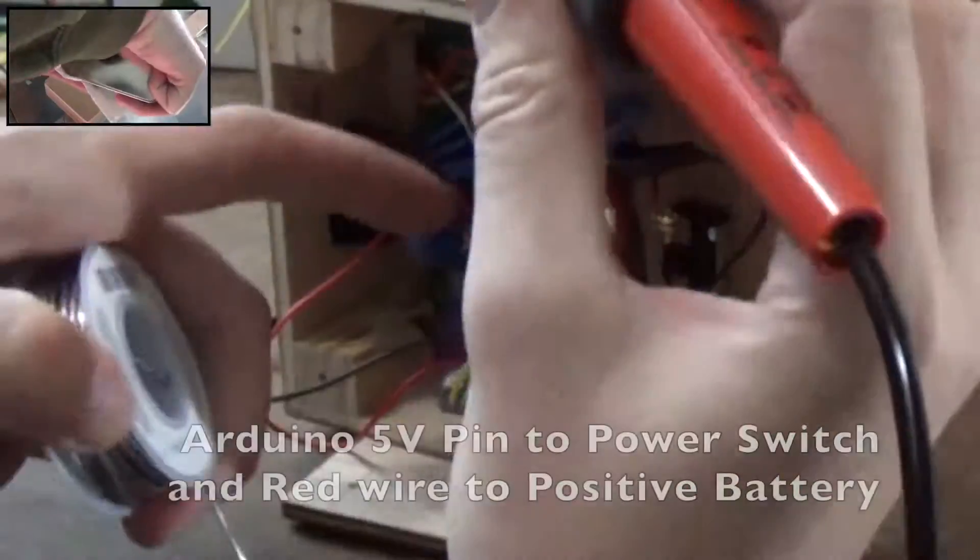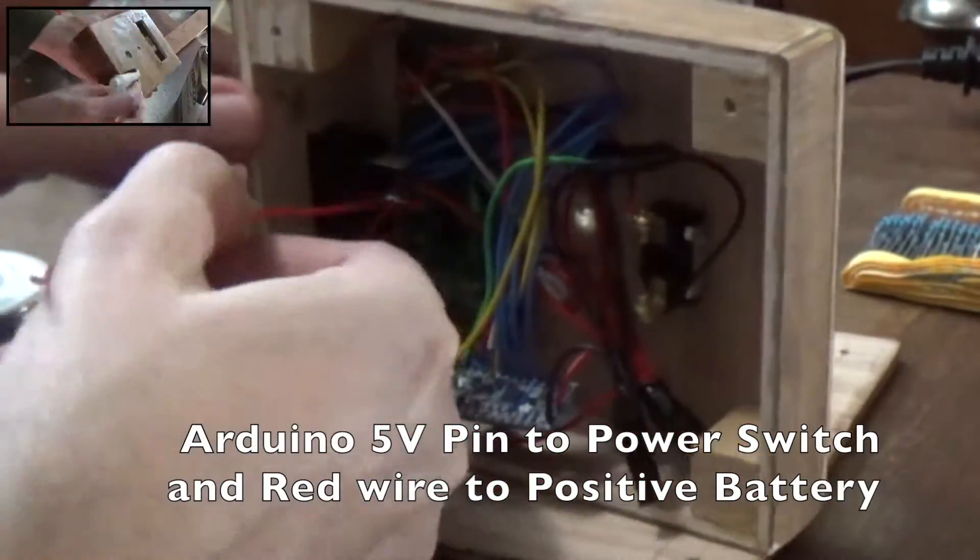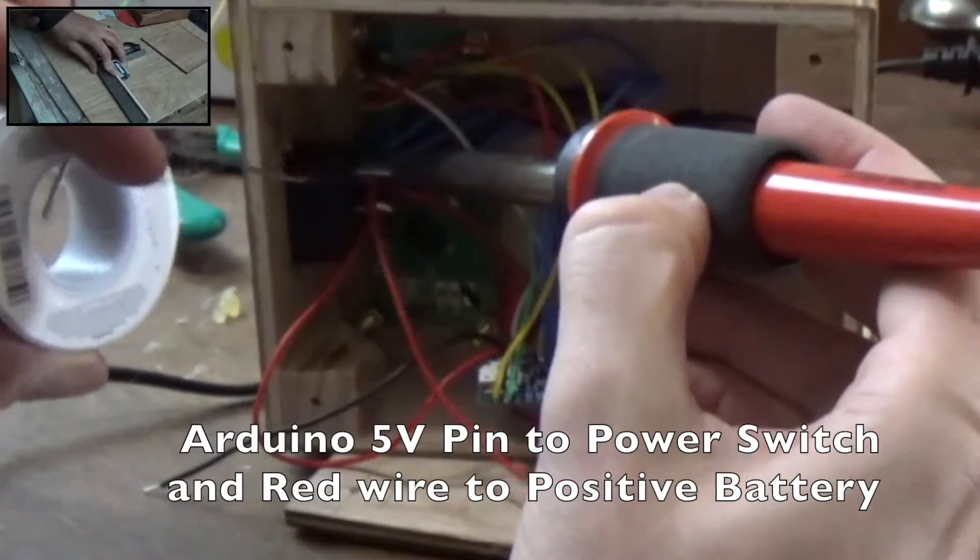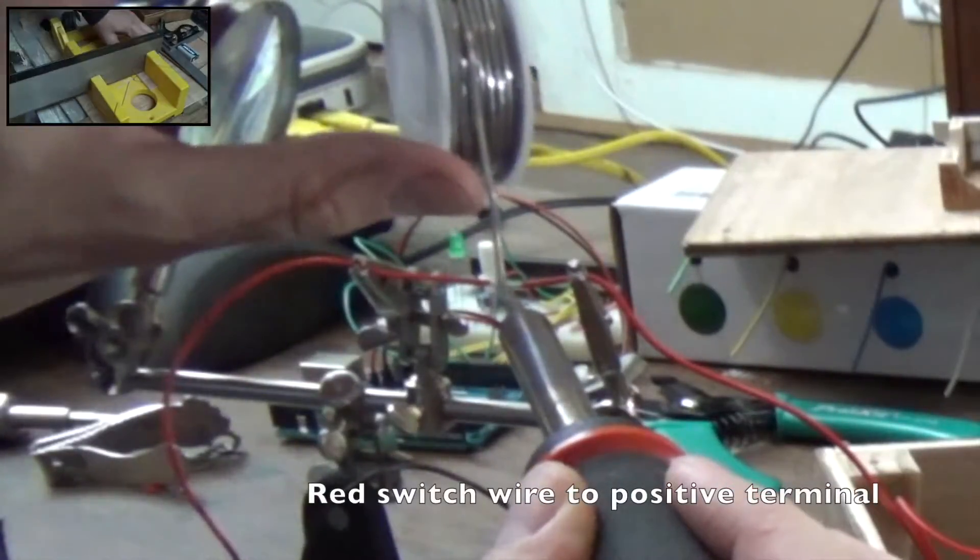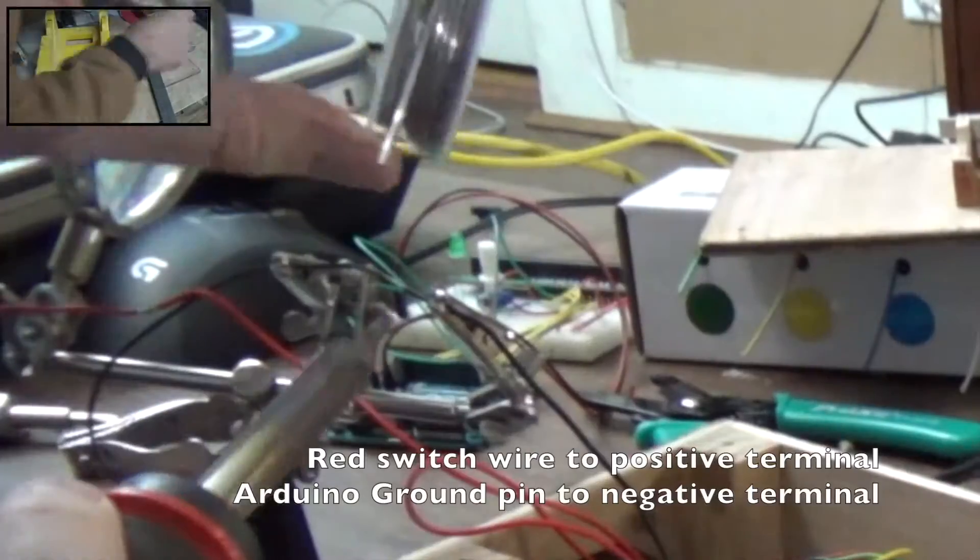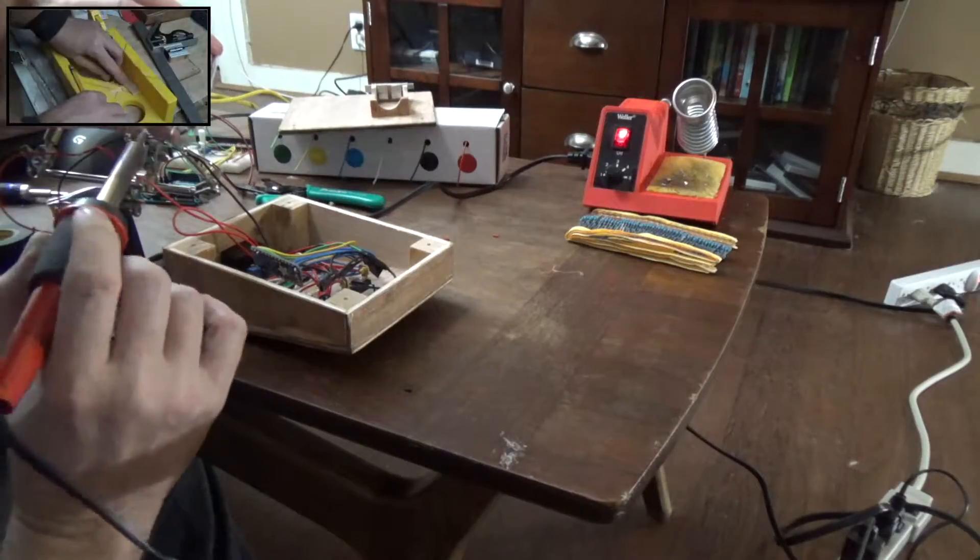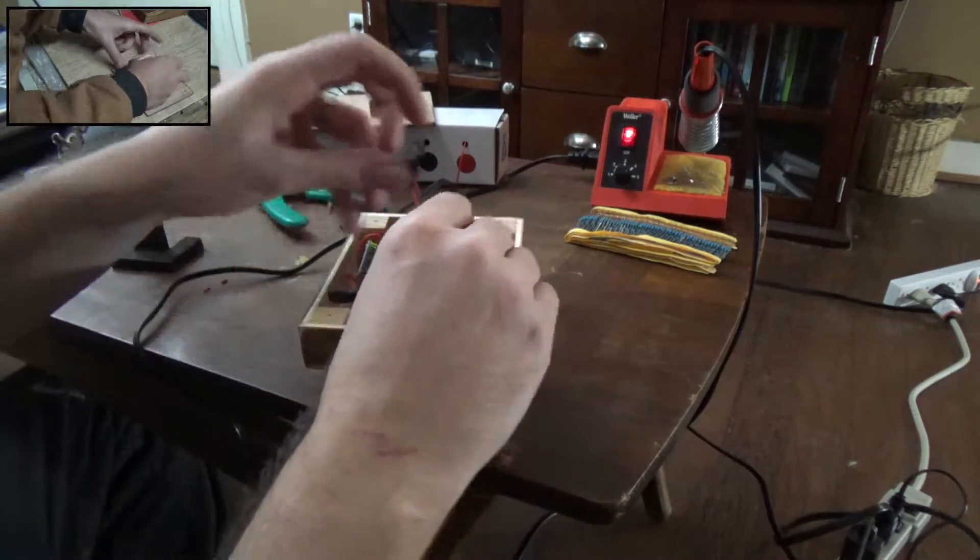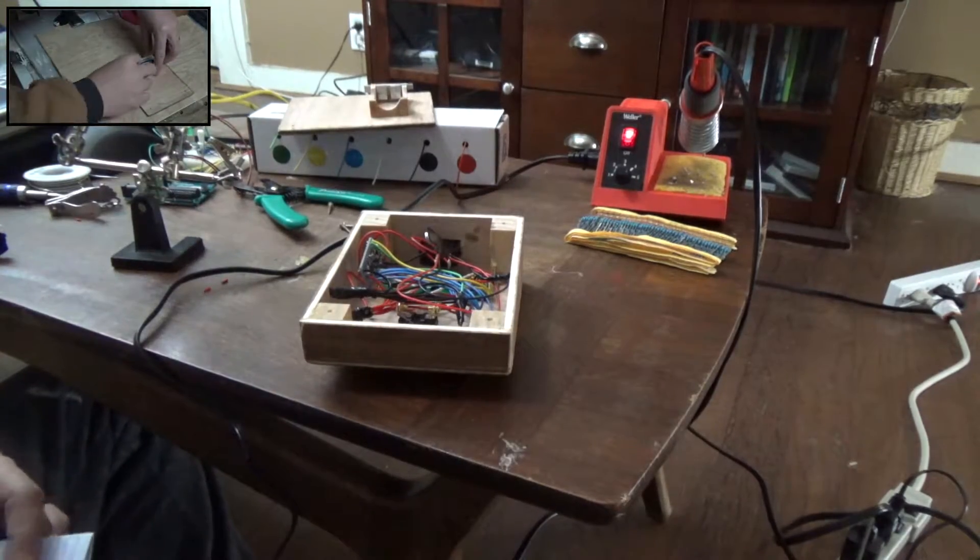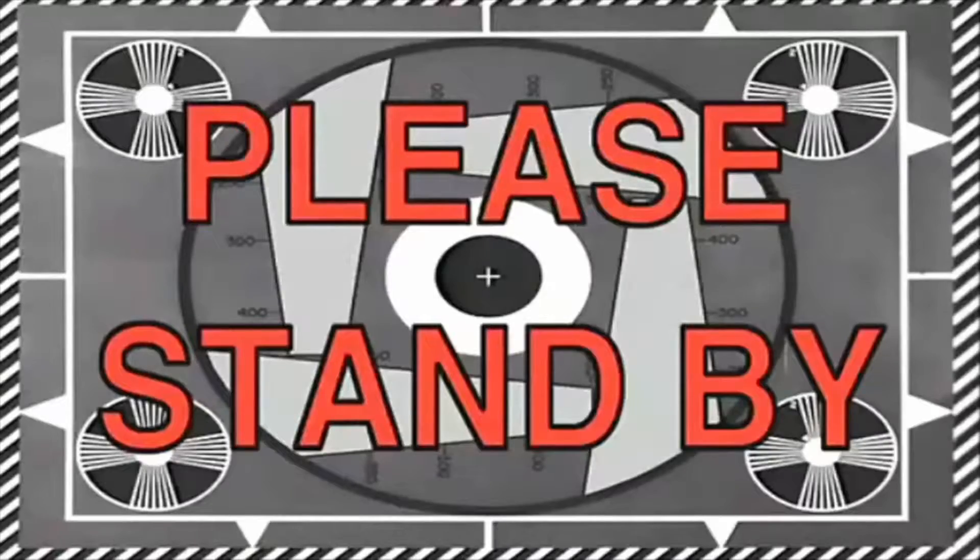Now I want to solder the Arduino 5 volt pin to the power switch and another red wire to the positive battery terminal. The red switch wire goes to the positive terminal and the Arduino ground pin goes to the negative terminal. Now what we need to do is program this Arduino, which I will do right now.